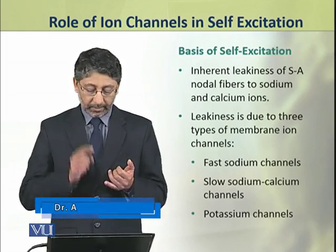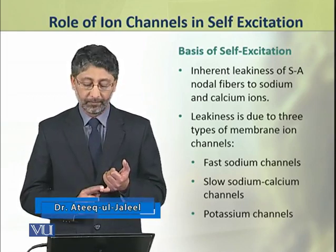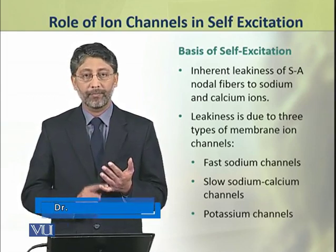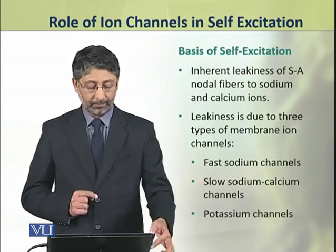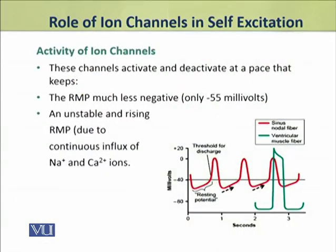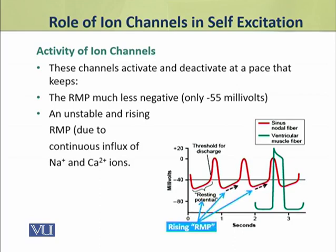These are the fast sodium channels, slow sodium-calcium channels, and potassium channels. These channels activate and deactivate at a pace that keeps the resting membrane potential much less negative — that is, only minus 55 millivolts, as compared to minus 85 to 90 millivolts in other cells. It also keeps an unstable and rising resting membrane potential due to continuous influx of sodium and calcium ions.